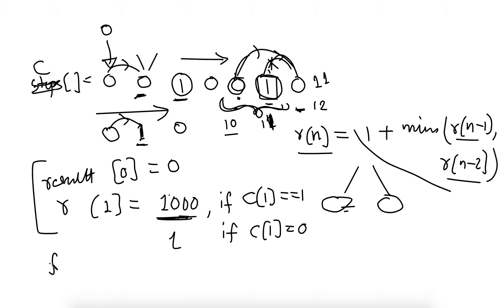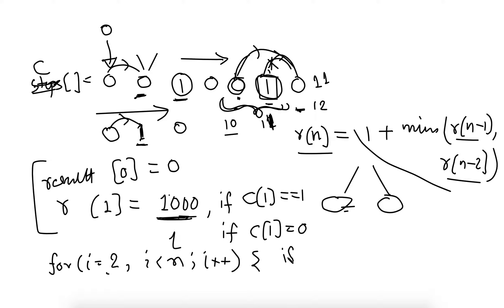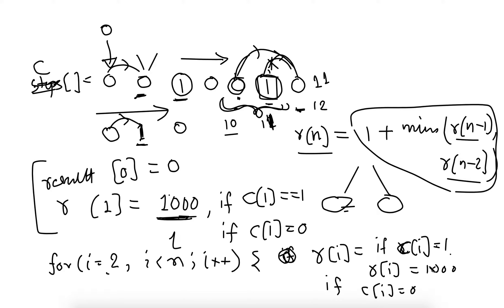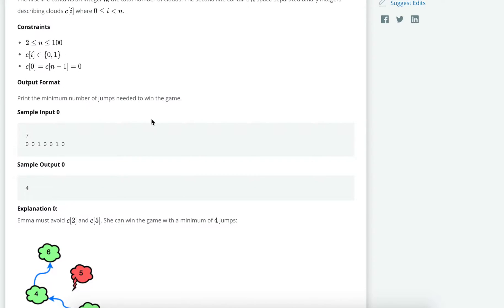For i from 2 to n, we've already solved indices 0 and 1, so we solve from 2 onwards. For each index, if c[i] equals 1, we initialize counts[i] with a high value. If c[i] equals 0, we pick the minimum of counts[i-1] and counts[i-2], because only one or two steps back are reachable. Let's write this in code.